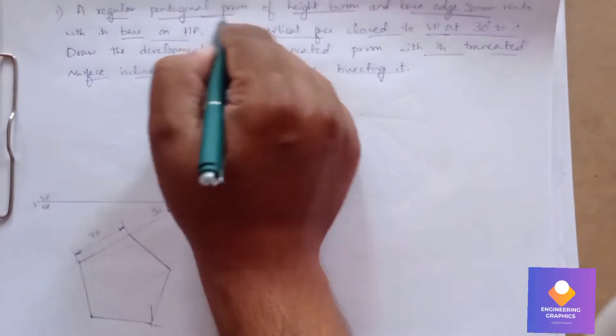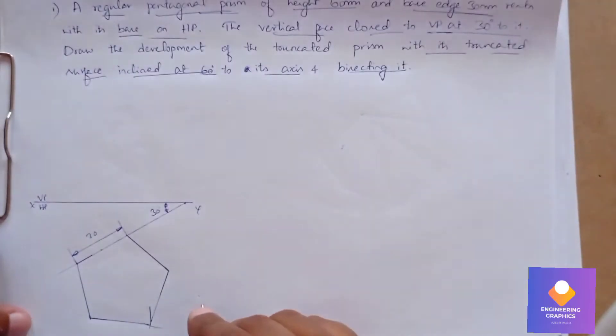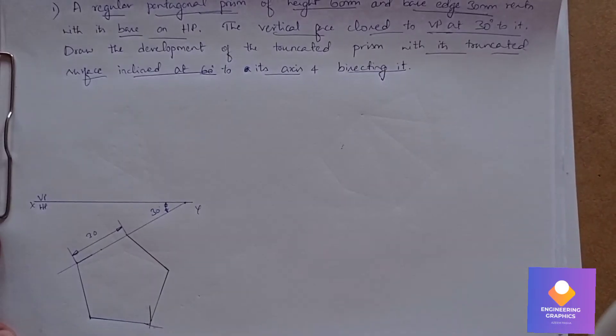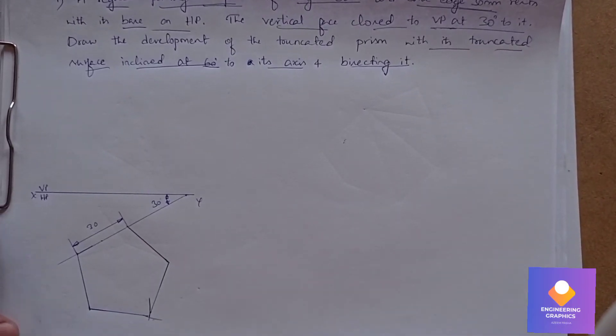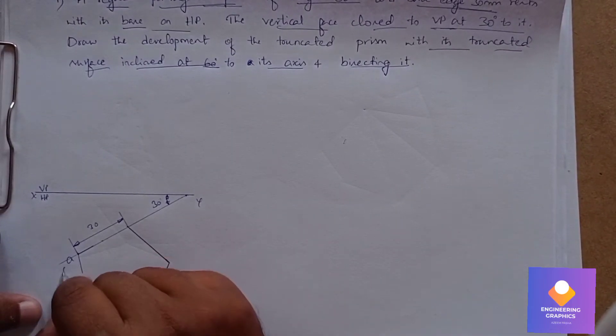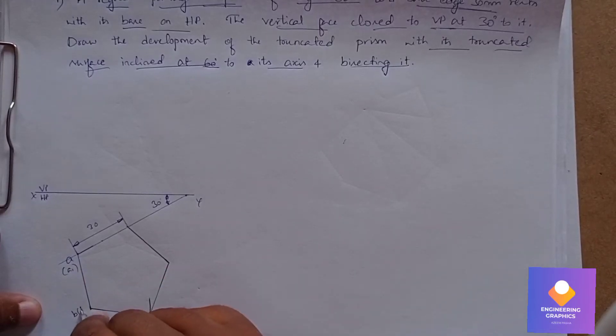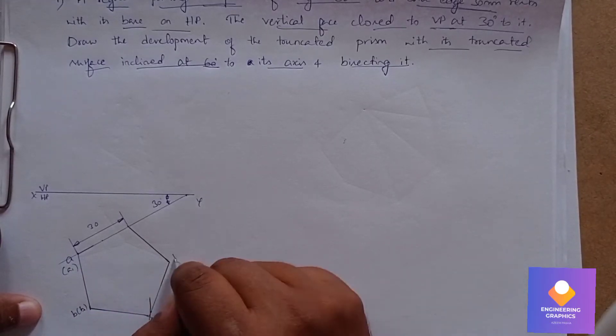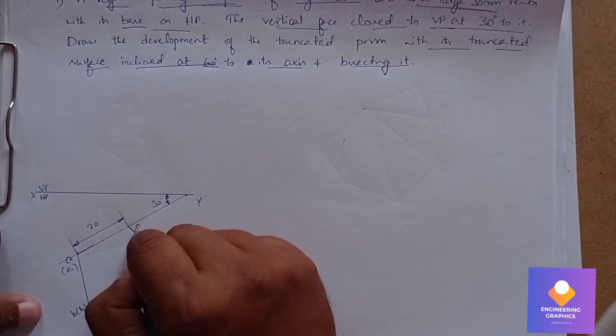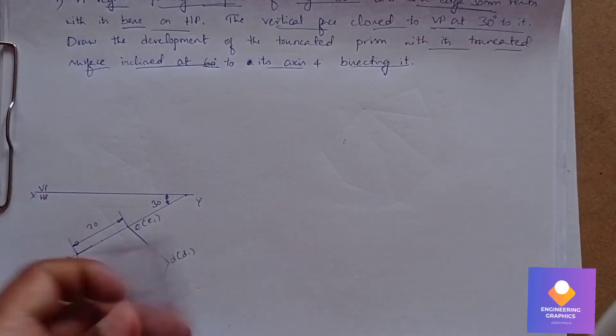We can mention the naming because it is a prism having both faces—top face and bottom face. So A, B, C, D, E for the top face, and A1, B1, C1, D1, E1 for the bottom face. E1 is not visible from the top face.